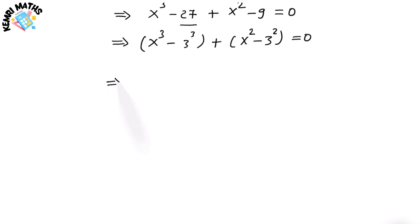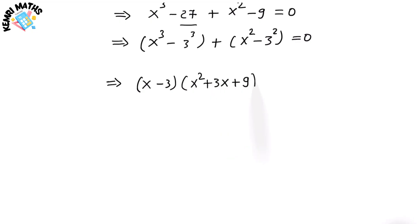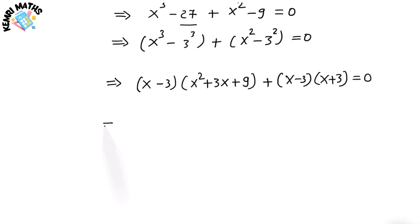We can expand these two terms using the algebra formulas for a³ − b³ and a² − b². So the equation becomes (x − 3)(x² + 3x + 9) + (x − 3)(x + 3) = 0.